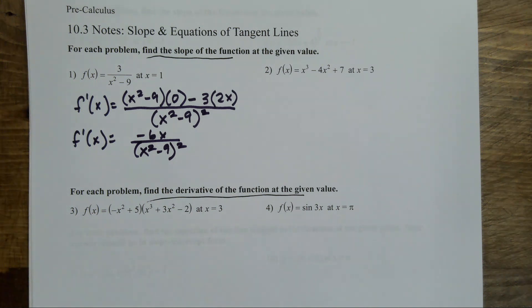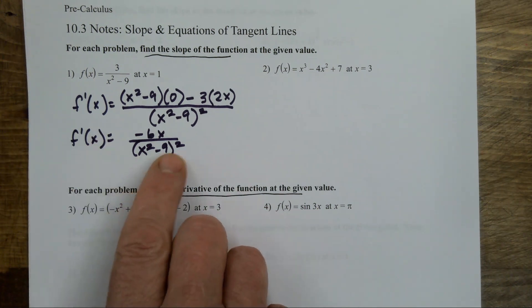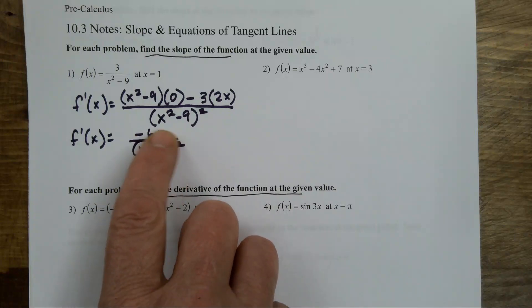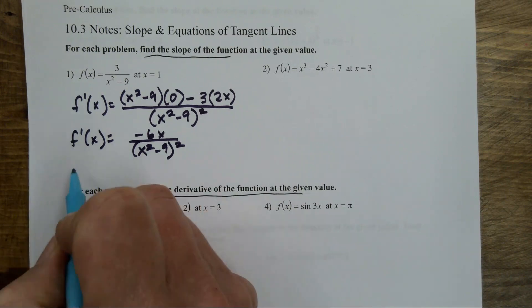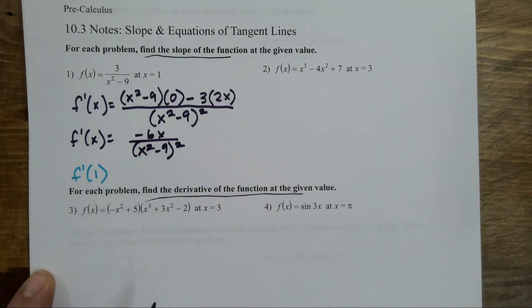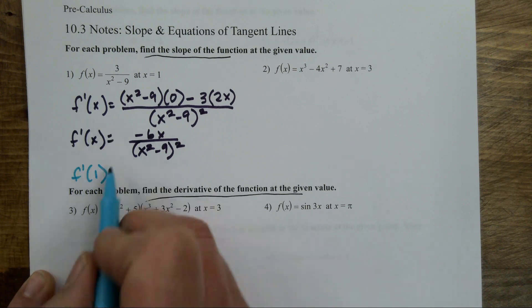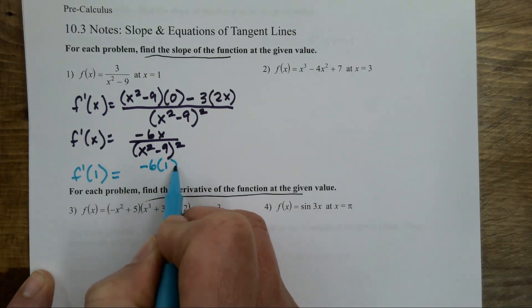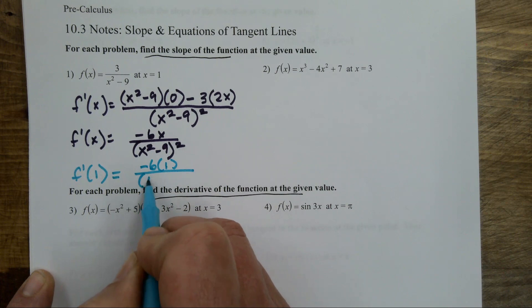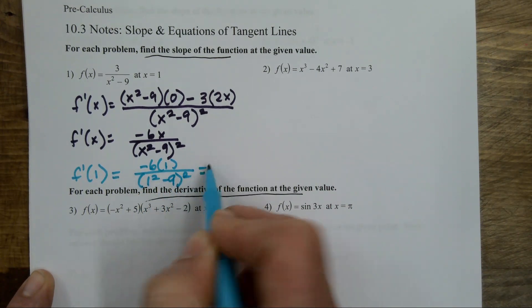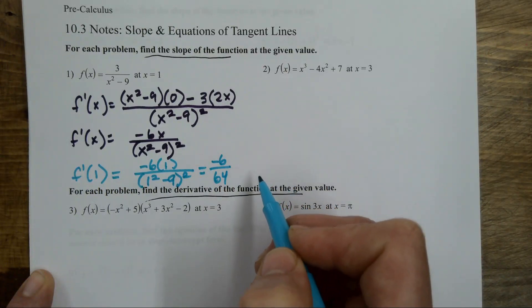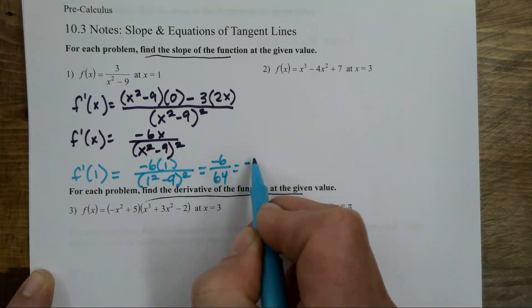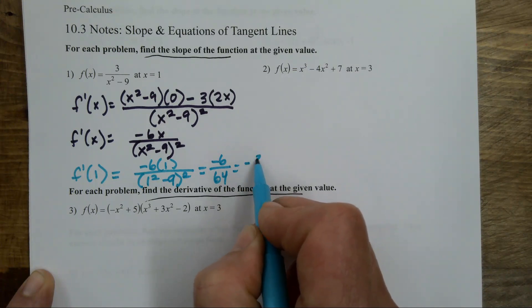It tells me what I want to evaluate at. This is the general formula for the slope of the tangent at any value of x. We are doing this one specific to one, so I go ahead and evaluate. I think it's negative three over thirty-two.